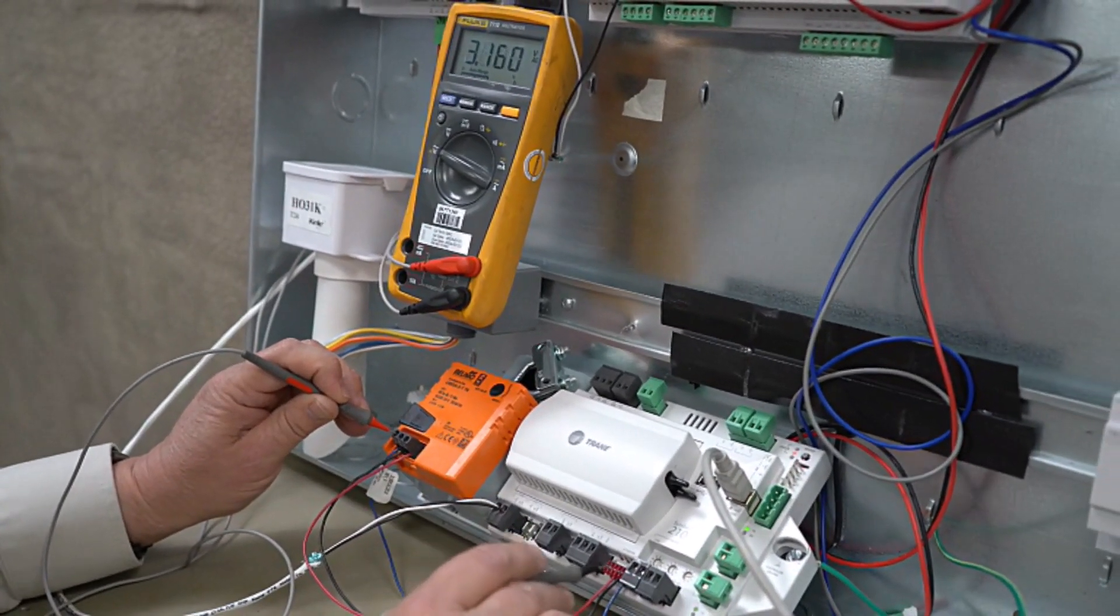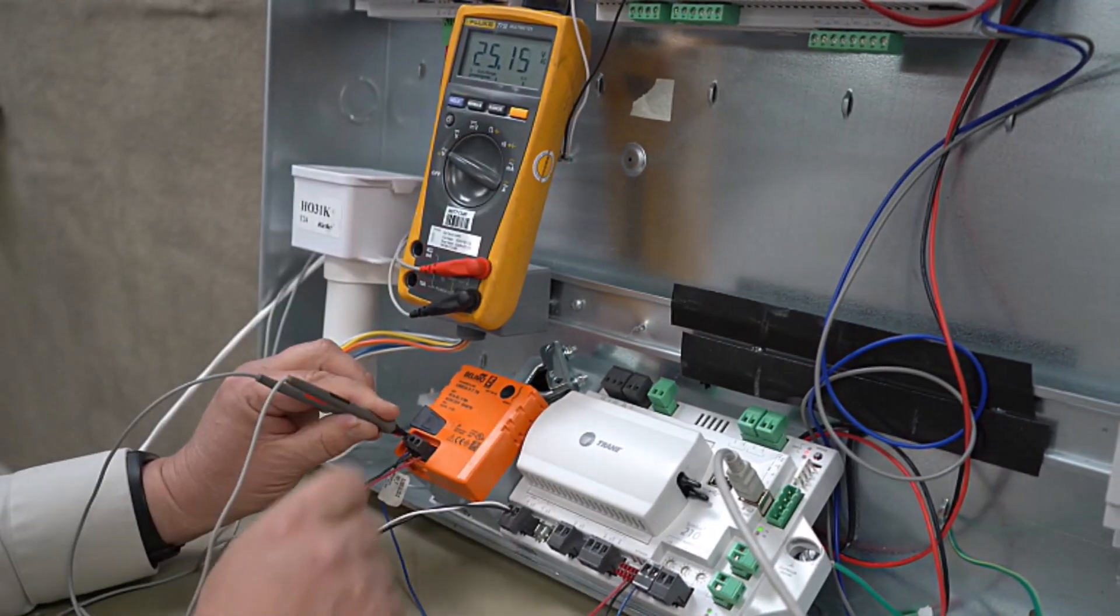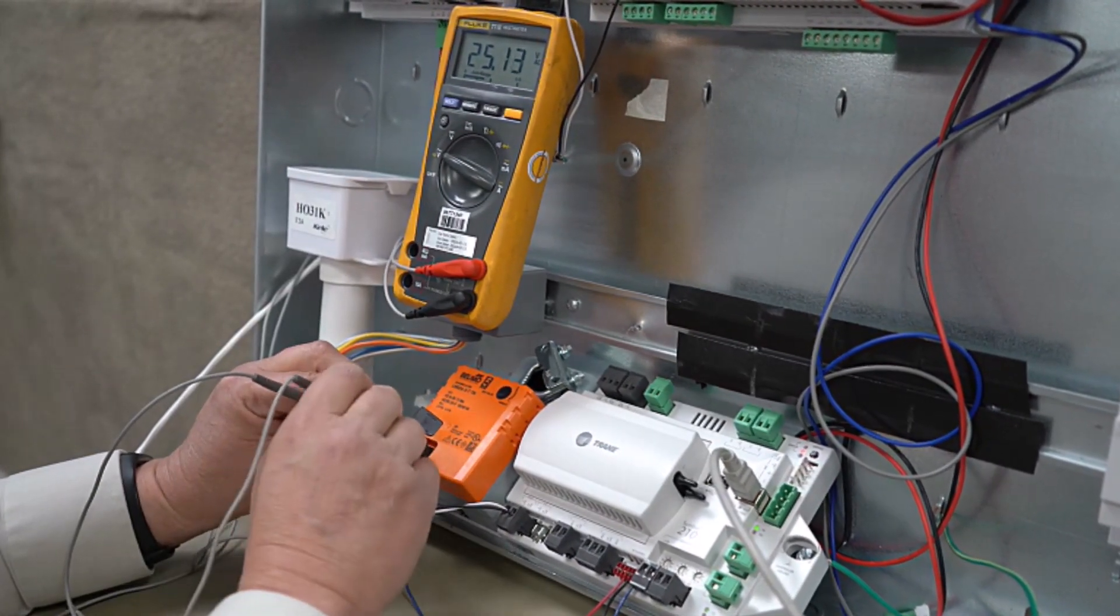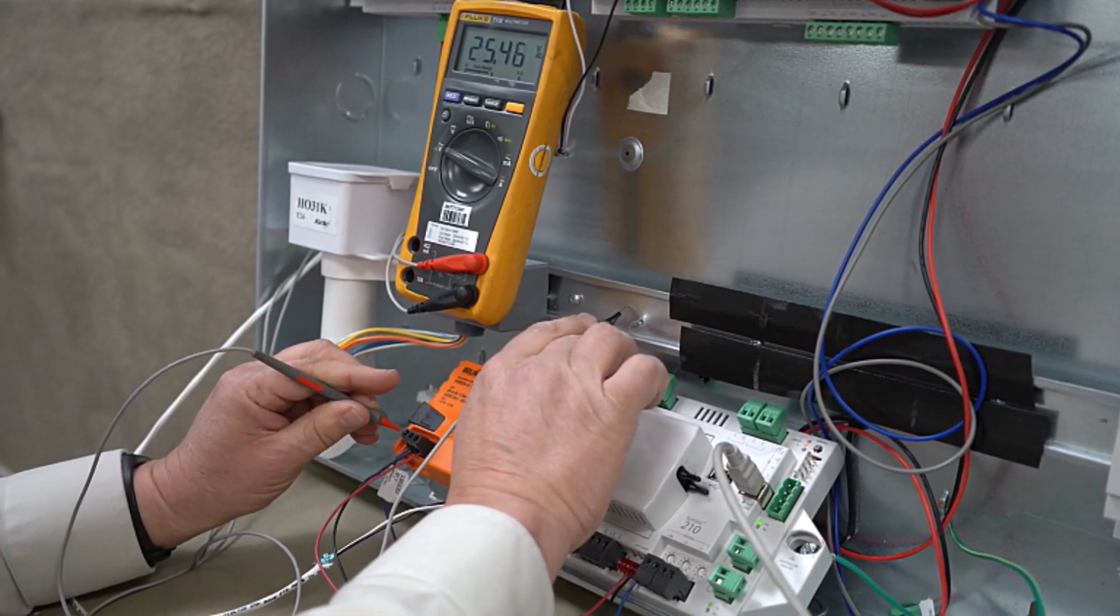So our actuator just came on. It's driving. We can see we get the full 25 volts across there for that voltage drop across here. But as we measure each leg to ground, there's the 25. That's our hot leg coming in.